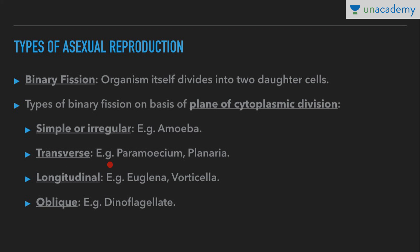Then we have transverse binary fission, in which cytoplasmic division occurs horizontally — for example in paramecium and planaria. In longitudinal binary fission, division occurs longitudinally, or vertically — for example in euglena and vorticella. And oblique binary fission occurs in dinoflagellates. So: simple or irregular can be in any plane, transverse is in the horizontal plane, longitudinal is in the vertical plane, and oblique is in the oblique plane.